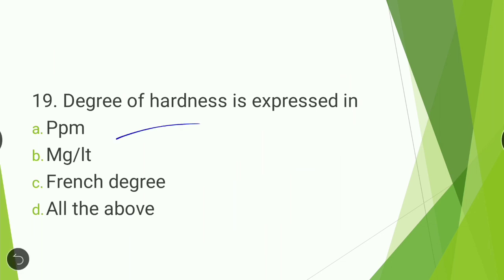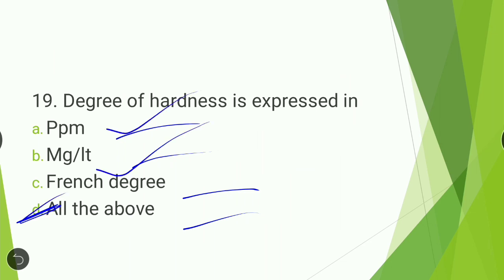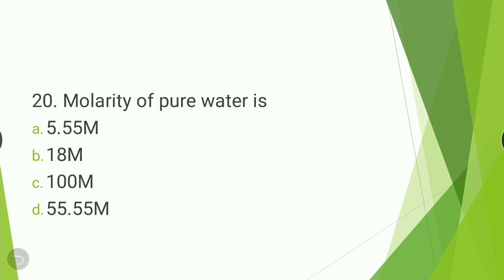Next question: degree of hardness is expressed in — parts per million, mg per liter, French degree, or all of the above? The answer is all of the above. Degree of hardness can be measured in ppm, mg per liter, and French degrees.